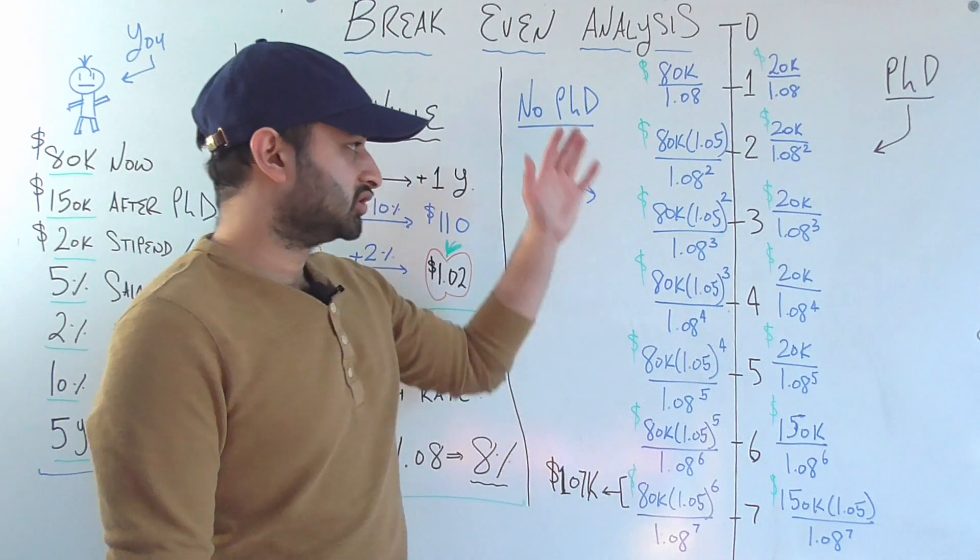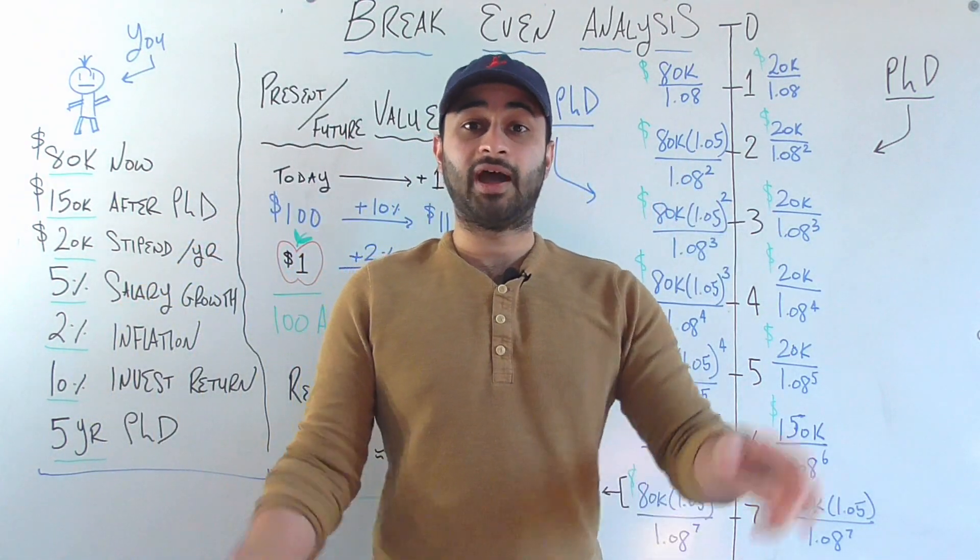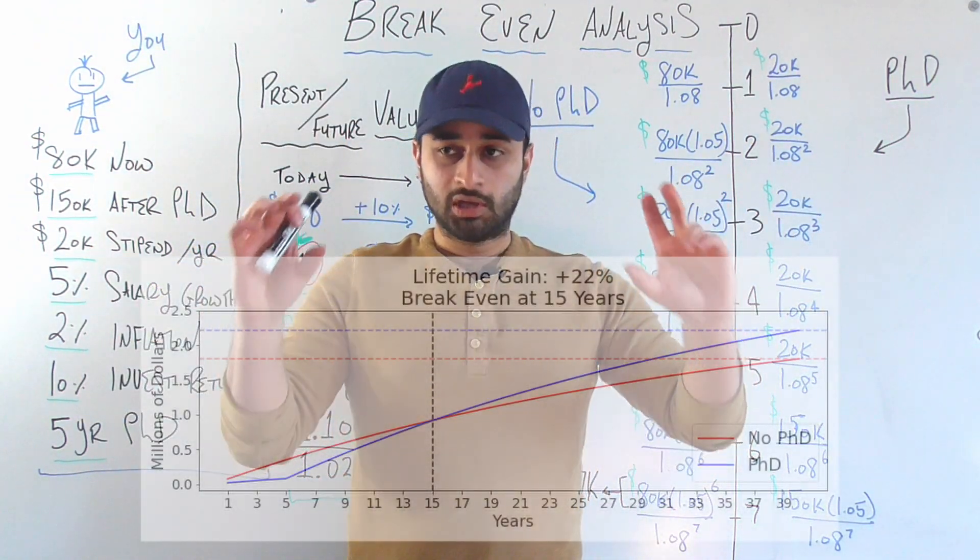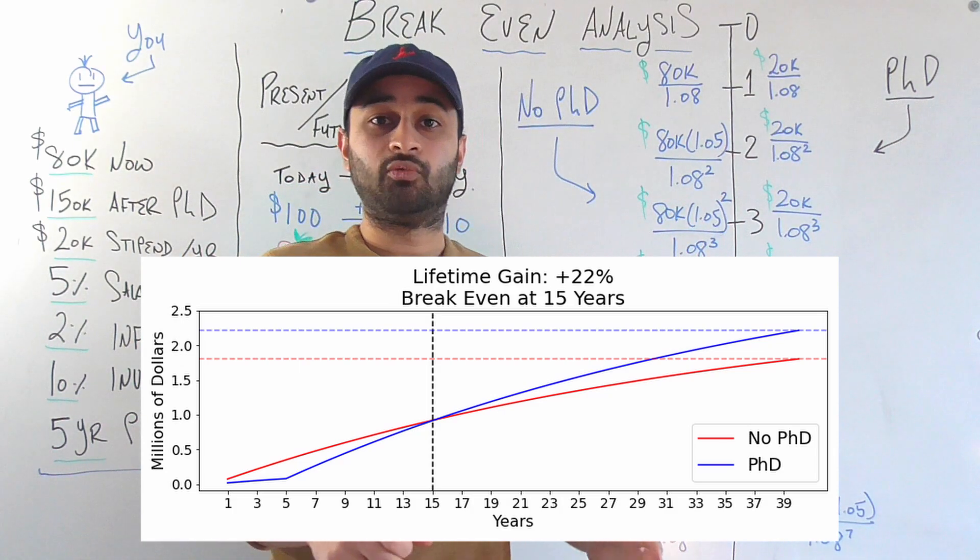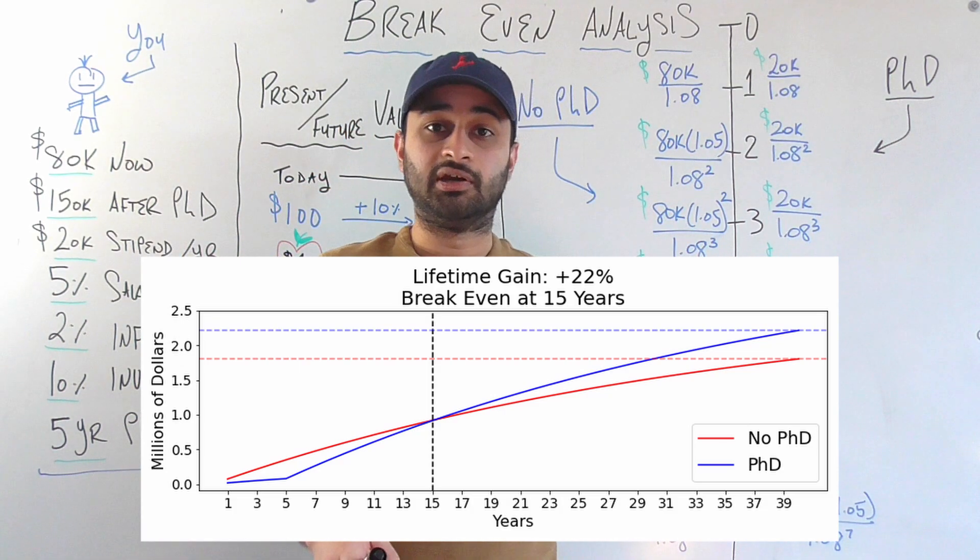You can write a pretty easy computer script to just do these for you and draw the graphs. And that result is shown here. So we see that if these are our conditions, then we're going to break even after 15 years.